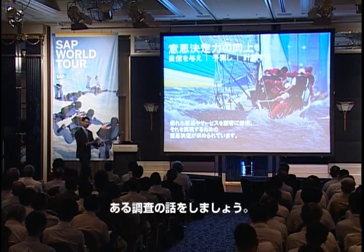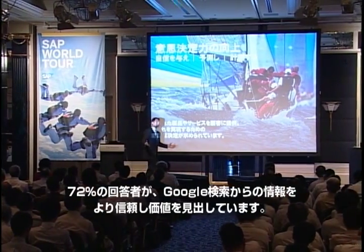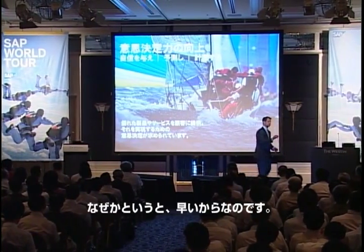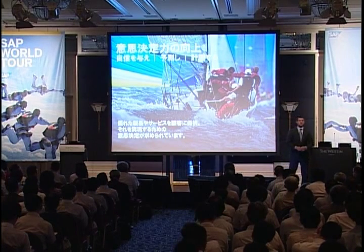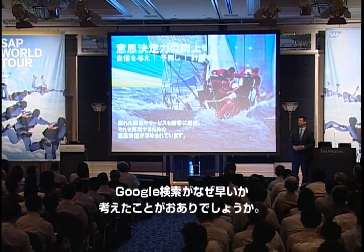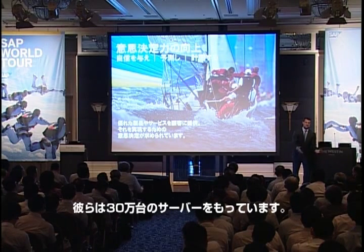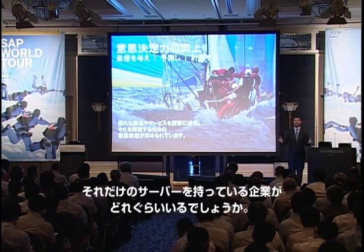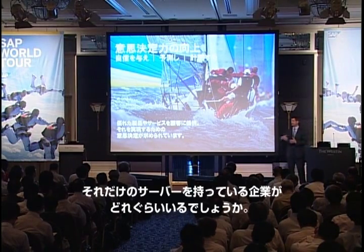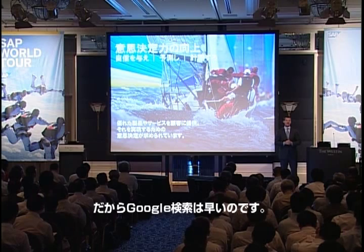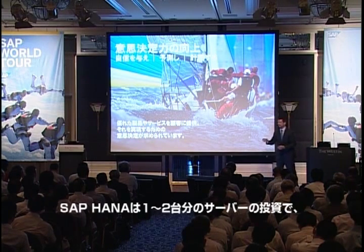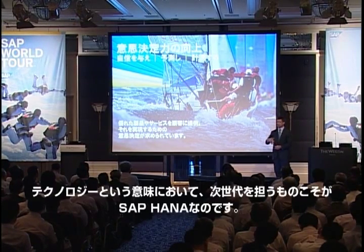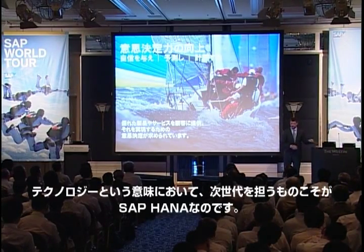Let's come back to the survey — why is it that 72% of people feel they get more value out of Google? Number one, it's very fast. But why is Google fast? Because they have 300,000 servers behind that tiny little search button. I don't know any IT department that has 300,000 spare servers. But my point is that HANA gives you the ability to invest in one or two servers and get an incredible level of performance, because we've taken a generational leap forward in technology.